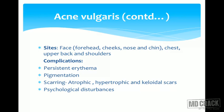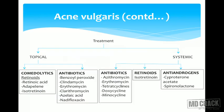Acne vulgaris can be associated with complications: lesions may heal with persistent erythema or pigmentation, and scarring is a major problem from grade 2 onwards. Patients can develop atrophic ice-pick-like scars or hypertrophic and keloidal scars, which can cause psychological disturbances. Treatment of acne is classified into topical and systemic agents. Topical agents include comedolytics such as retinoids, and topical antibiotics like benzoyl peroxide, clindamycin, erythromycin, clarithromycin, azelaic acid and nadifloxacin.